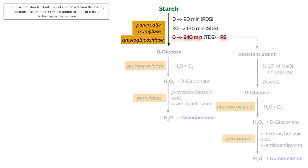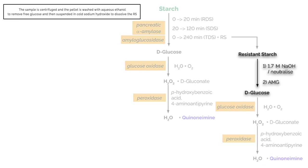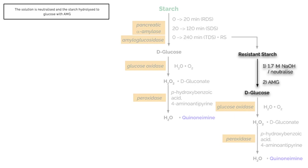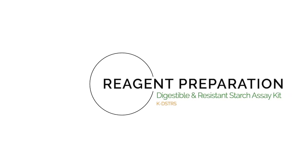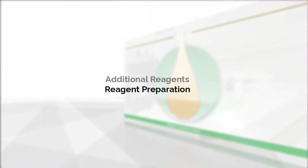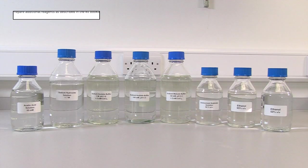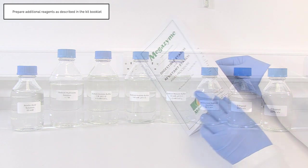For resistant starch measurement, a 4 milliliter aliquot is removed from the stirring solution after 240 minutes and added to 4 milliliters of ethanol and mixed thoroughly. The sample is centrifuged and the pellet is washed with aqueous ethanol to remove free glucose, then suspended in sodium hydroxide to dissolve the resistant starch. The solution is neutralized and the starch hydrolyzed to glucose with amyloglucosidase. D-glucose is quantitatively measured with GOPOD reagent, and the amount is stoichiometric with the resistant starch in the sample.